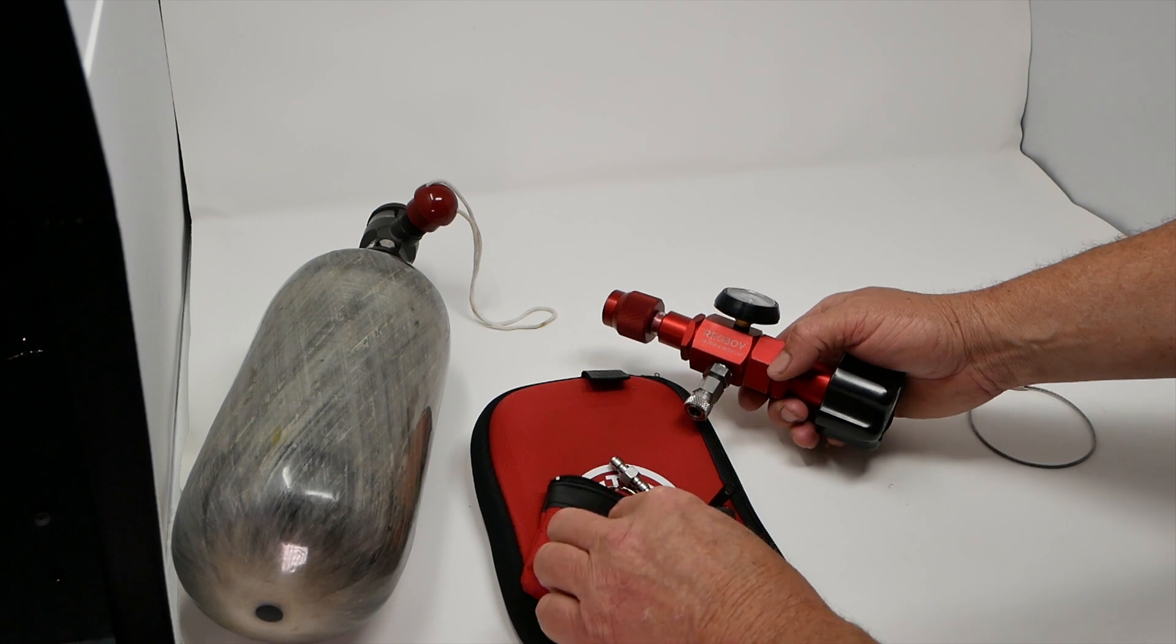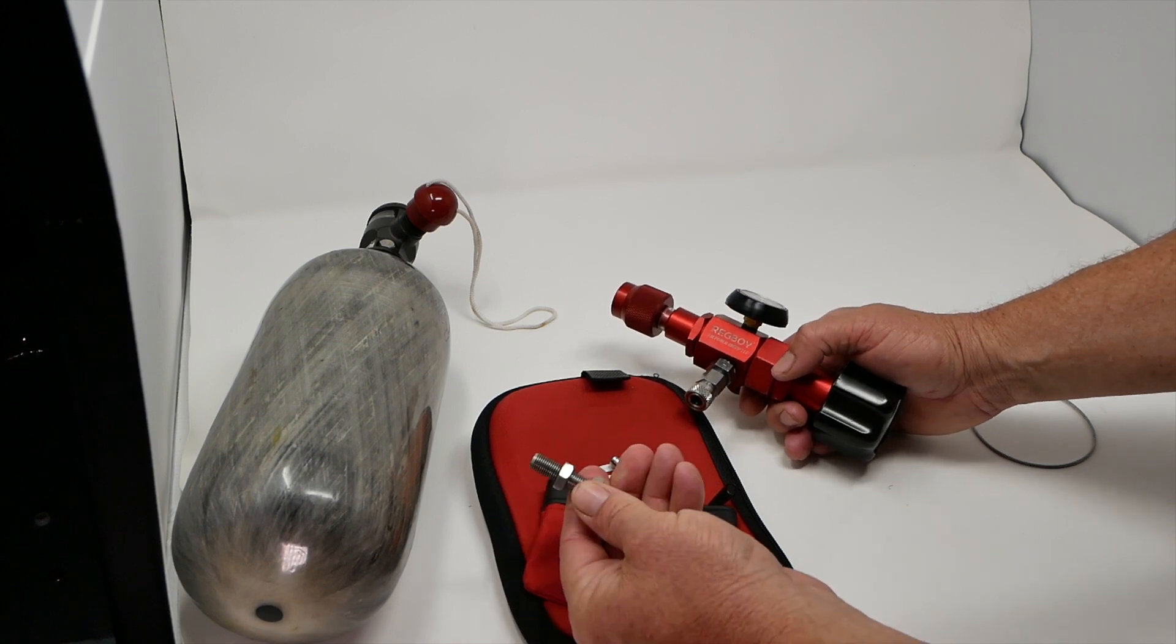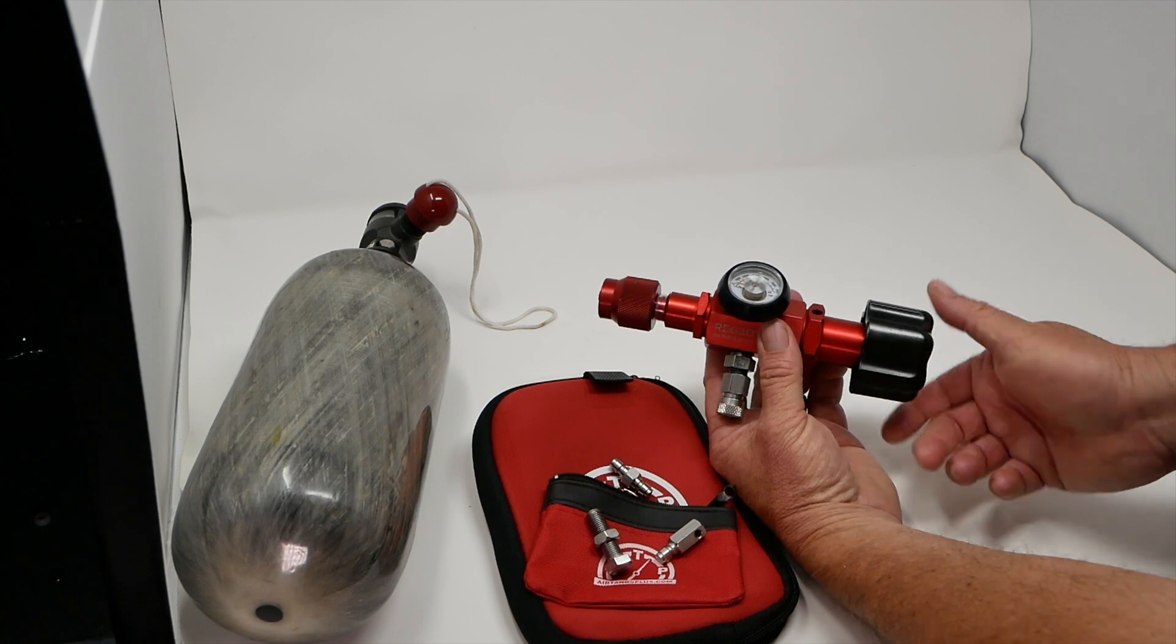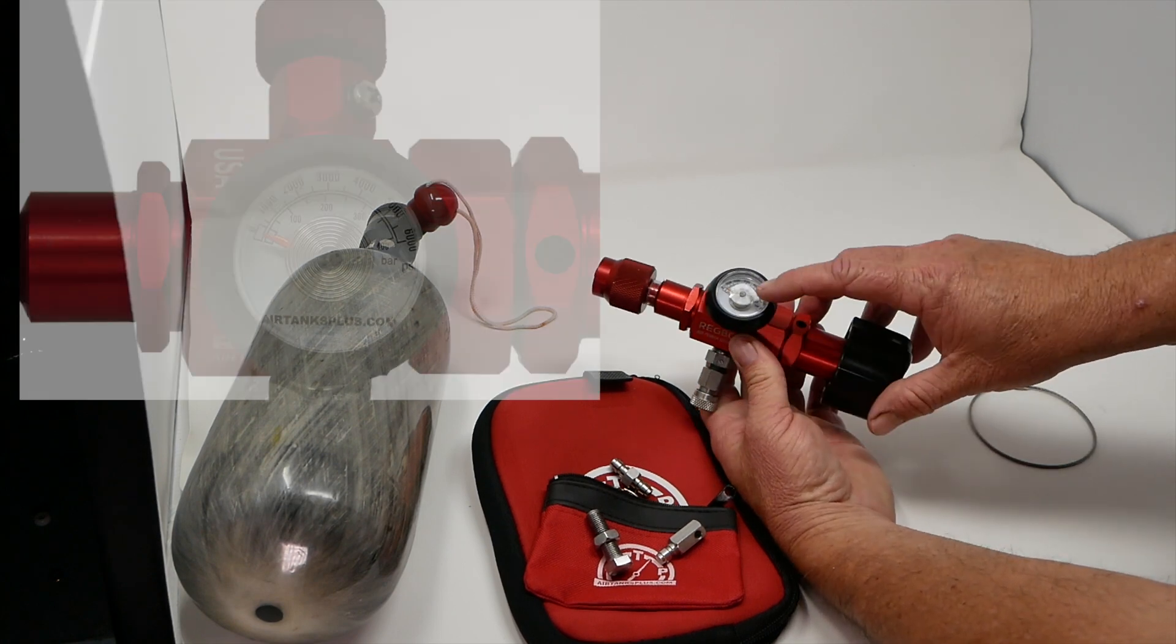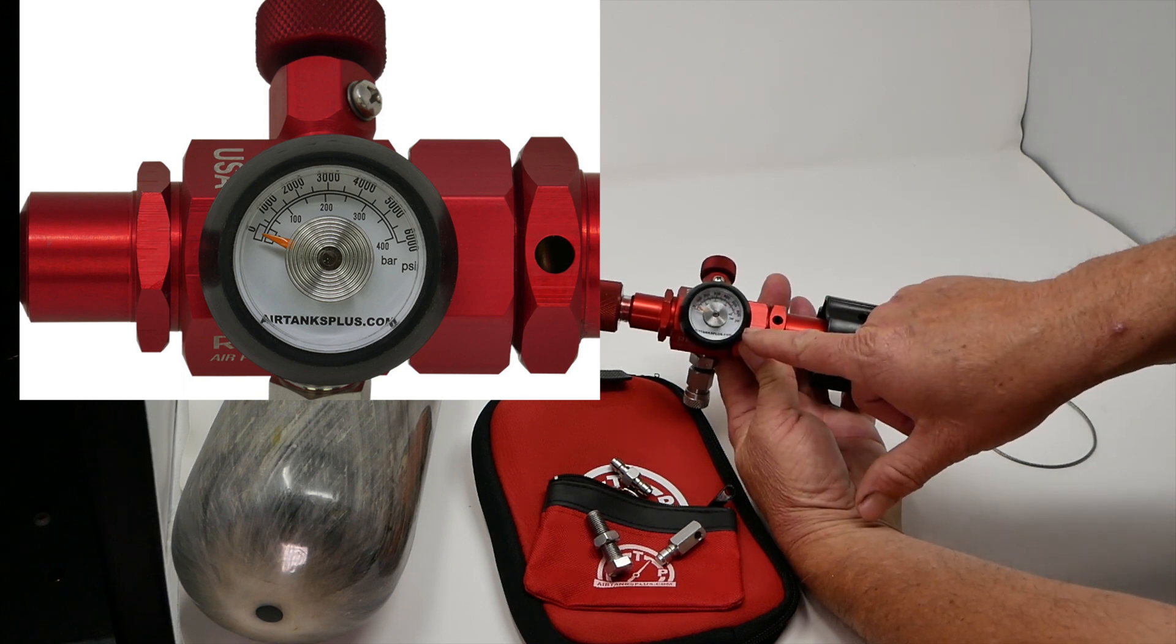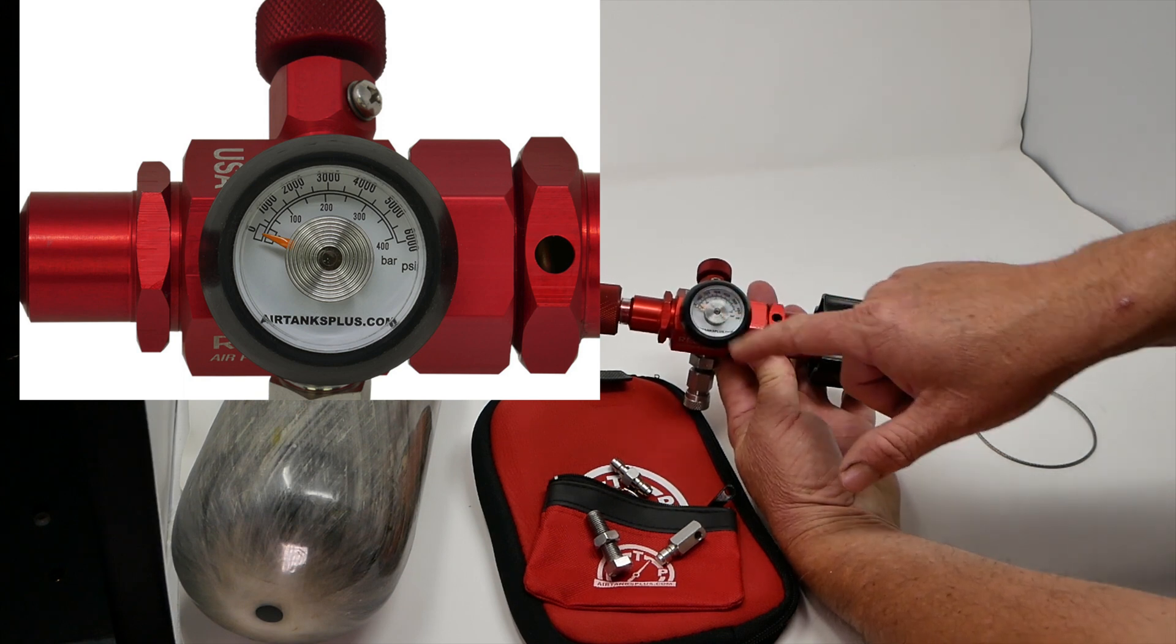The next thing it comes with is this regulator adjustment bolt with locking nut. This is how you adjust the regulator by turning this knob. The farther you turn it in, the more pressure is allowed to come out. You can see the pressure here on this gauge. You can see it in both PSI and bar.